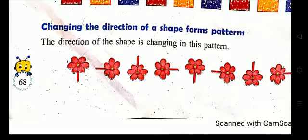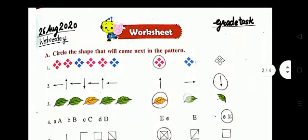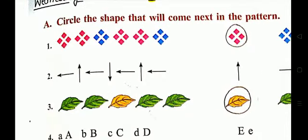So let us solve the worksheet in your book. Circle the shape that will come next in the pattern. You can see shapes are given: first two are red color, then blue, then again two red, then blue. What will come next? Next will be red color. So the pattern is 2 red, 1 blue, 2 red, 1 blue — then next will be 1 red.